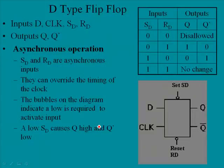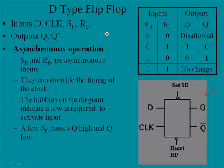The first flip-flop we're going to look at is the D-type, and we have a schematic symbol in the right-hand corner. Looking at the inputs: we have D for data, a clock input, and the set and reset inputs, often indicated by SD and RD. We have two outputs — Q and not-Q — which will always be opposite each other: if Q is 1, not-Q is 0, and vice versa.